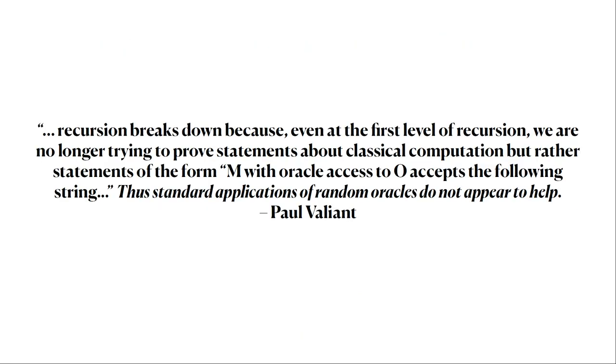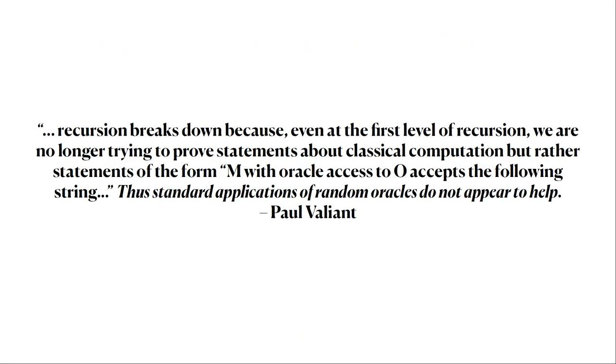Valiant noted this. If you look at the paper, you'll find something like this: Recursion breaks down because even at the first level of recursion, we're no longer trying to prove statements about classical computation, but rather statements of the form, a machine with oracle access to the random oracle accepts the following string. He notes that thus, the standard application of random oracles did not appear to help you in construction this. So to which extent can we prove this intuition? An intuition that many people who have looked at this problem have. What can we say about it formally?